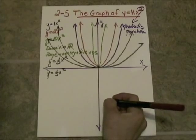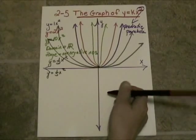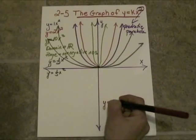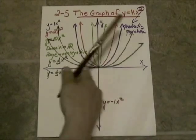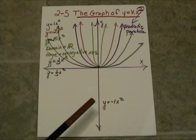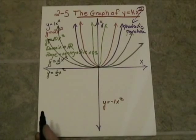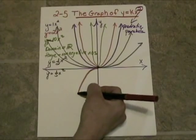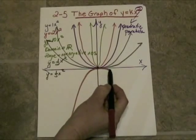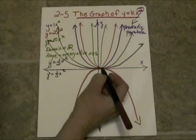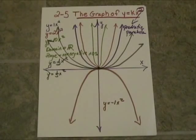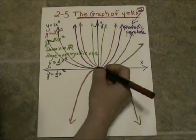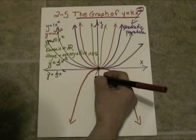Now let's see what happens if our constant of variation turns out to be negative. Starting with y equals negative one x squared instead of positive one x squared, the effect turns the parabola upside down. This is a review of Algebra 1. You still have your vertex at (0, 0), but this time the vertex is at the top of the curve, so it is called a maximum — the highest or tallest point on the whole curve.